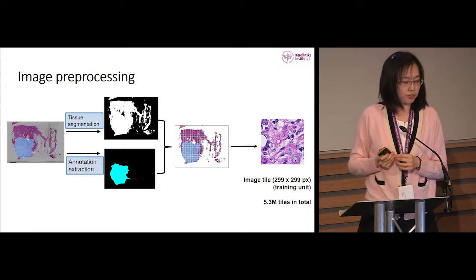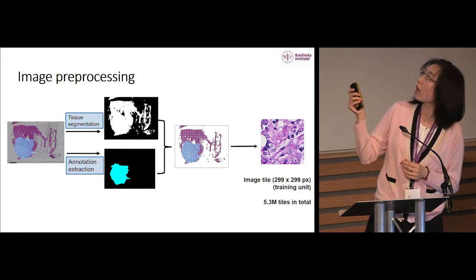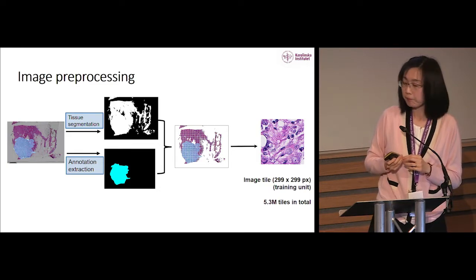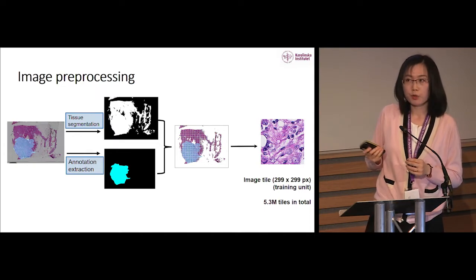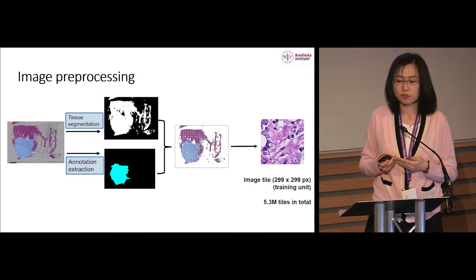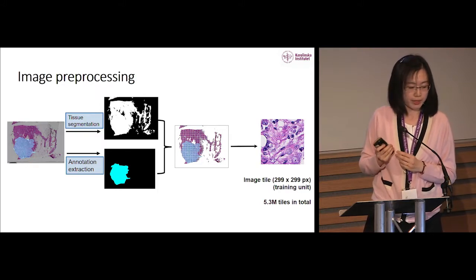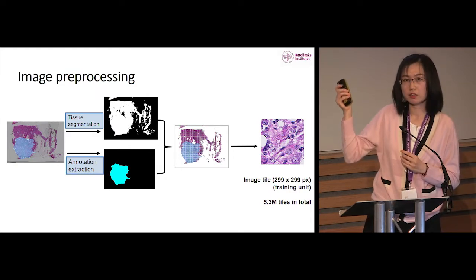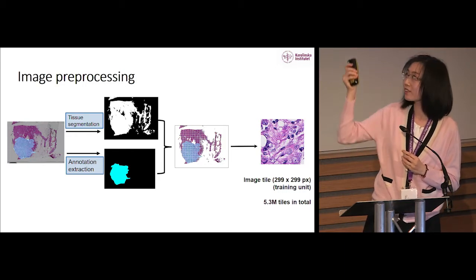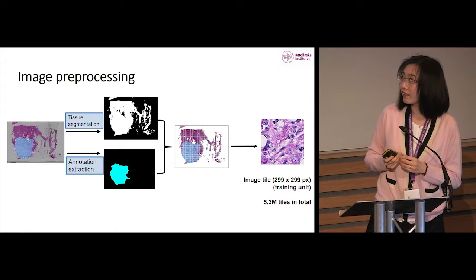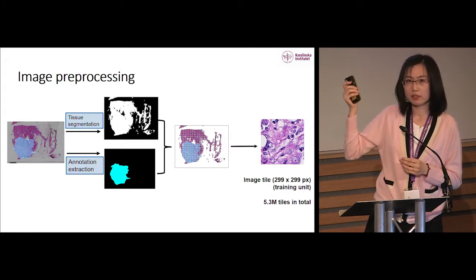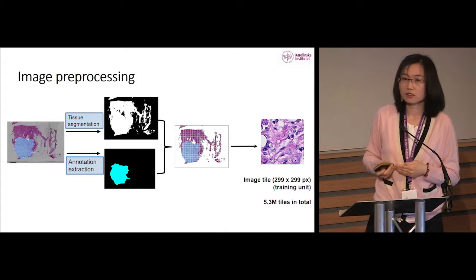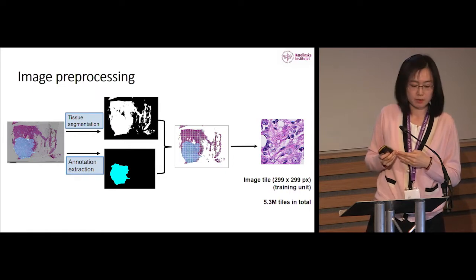For image pre-processing, we first extract a tissue mask to exclude background areas that don't contain tissue. For the ClinSec dataset, we have annotations for invasive cancer regions from two individual pathologists, allowing us to calculate annotation masks and label tumor versus benign regions. Using these labels, we tile whole slide images into small image patches of 299x299 pixels to form our training units, yielding around 5.3 million image patches in total.